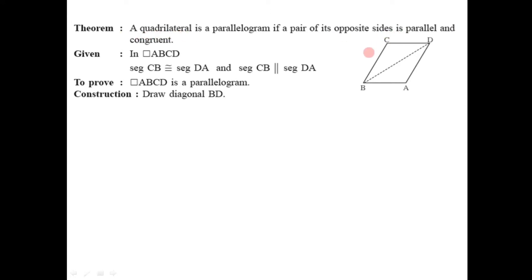To prove this theorem we need a diagram. So let us consider a quadrilateral ABCD in which it is given that one pair of opposite sides is parallel and congruent. For this case, segment CB is congruent to segment DA. So CB and DA are the opposite sides of this quadrilateral which are congruent, and CB is parallel to DA — meaning the same pair of opposite sides is parallel also.